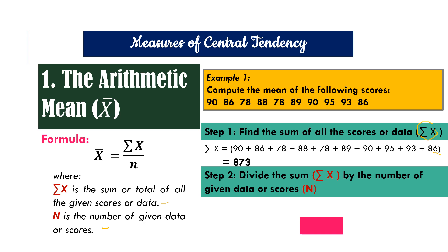For step two, we divide the sum that we've got in step one by the number of given data or scores, which is n. And n here is 10, because there are 10 scores in the given. We substitute to our formula. So the mean for arithmetic mean is 873 divided by 10. We simply divide the result from step one and step two, and the result is 87.3. It means that the average or arithmetic mean of the given data is 87.3.